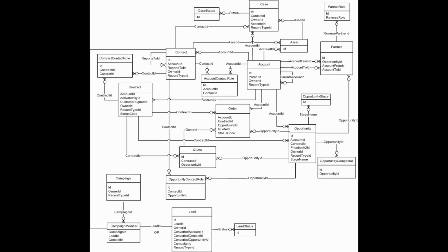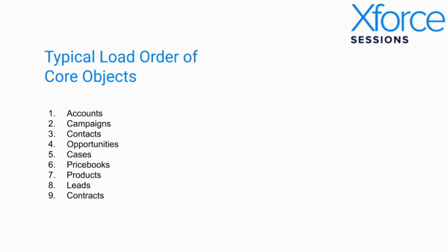Here's a quick look at the entity relationship diagram for standard sales objects in a Salesforce org. The interrelationship of these objects defines a need for a specific order of migration to successfully rebuild the same relationships from the retiring org to the newly created records and IDs in the surviving org. A typical order for importing core objects would look something like this: accounts followed by campaigns, followed by contacts, etc., so you can link these all together as they were in the previous org.